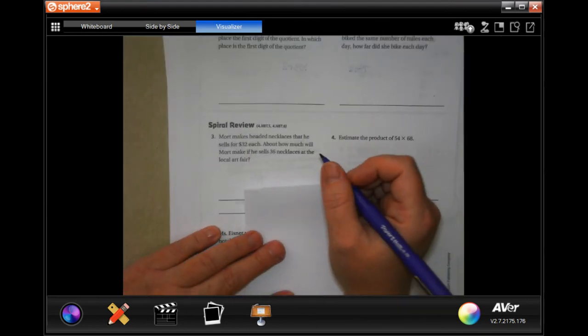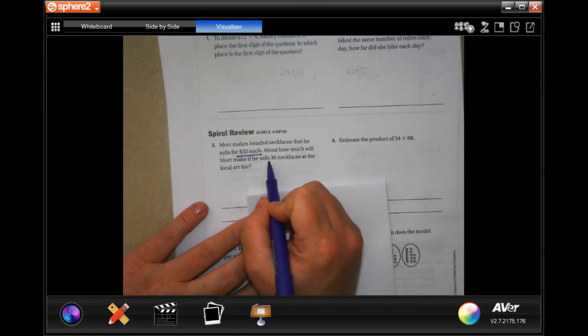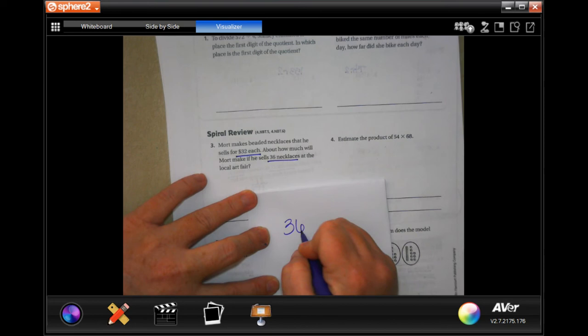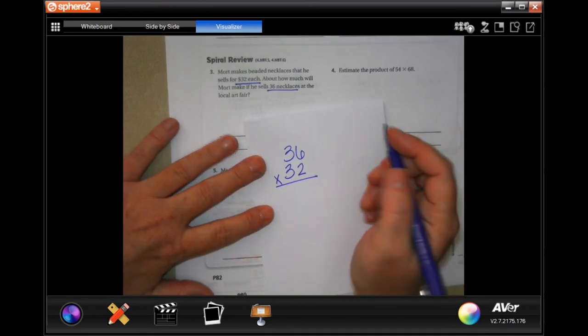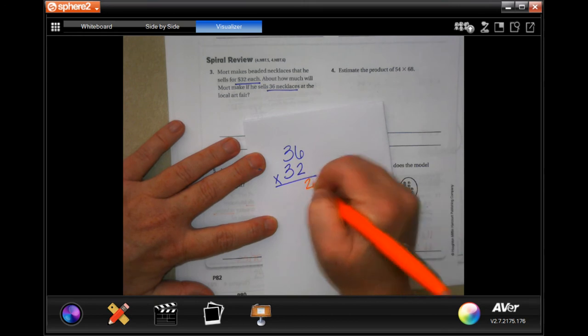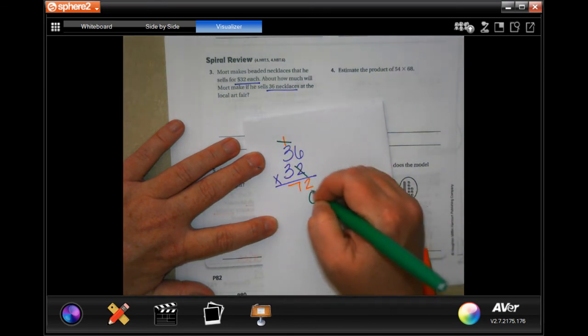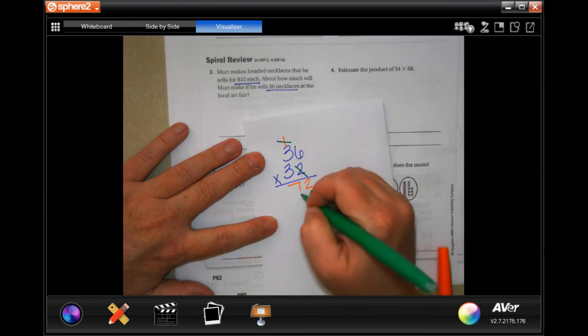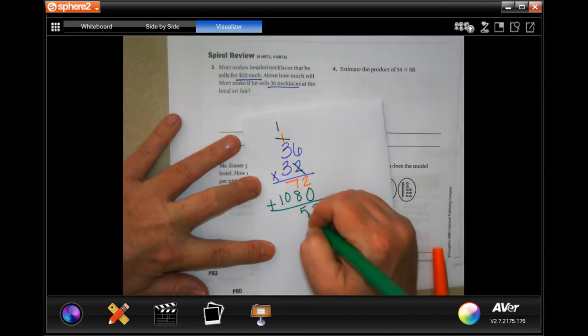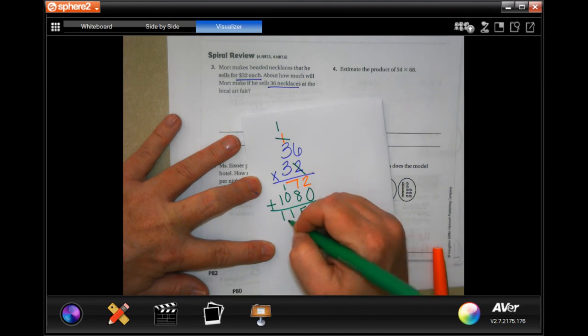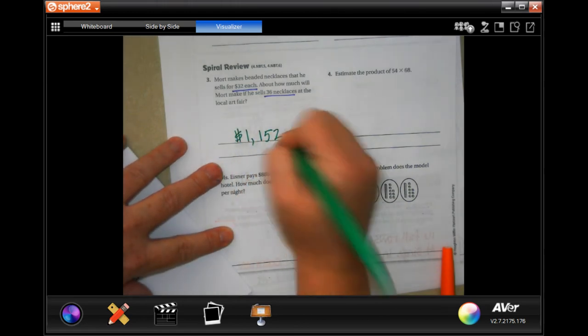It says number three on spiral review says Mort makes heated necklaces that he sells for $32 each. About how much will he make if he sells 36 necklaces at the local fair. So 36 necklaces, $32 each. 2 times 6 is 12. Carry the 1. 2 times 3 is 6. Plus one more is 7. We're going to go through and tick, tap. 3 times 6 is 18. Carry the 1. 3 times 3 is 9. Plus one more is 10. Add those up. 2, 15. Carry the 1. So $1,152.